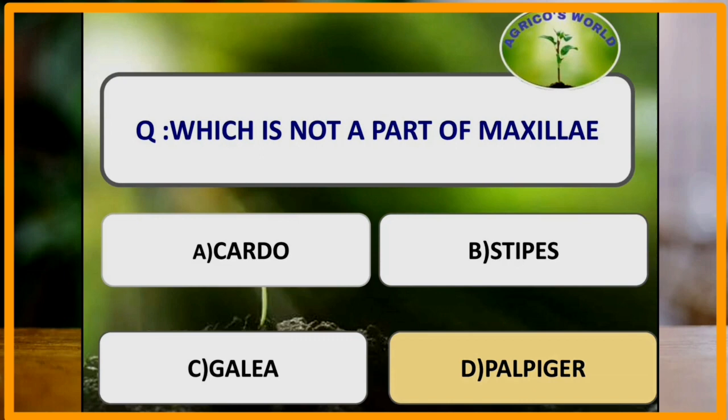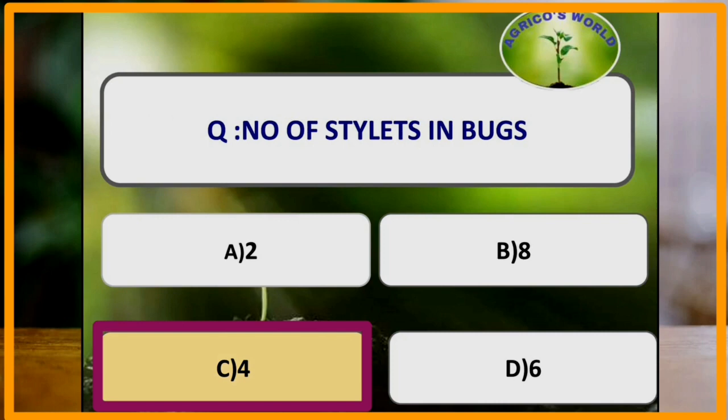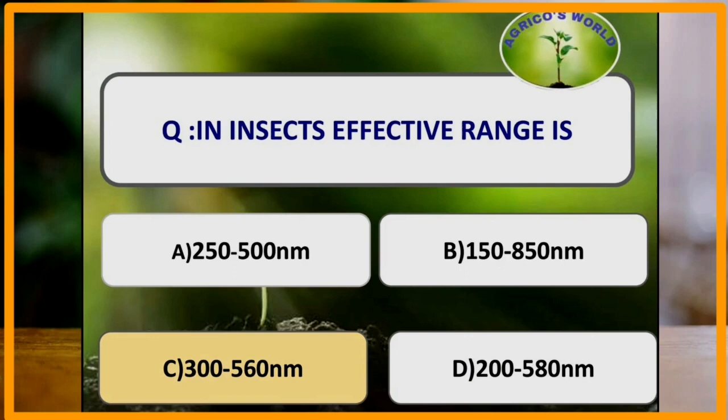Number of stylets in bugs: in bugs there are 4 stylets, whereas in mosquitoes there are 6 stylets. In insects, the effective visual range lies between 300 to 560 nanometers.